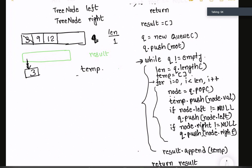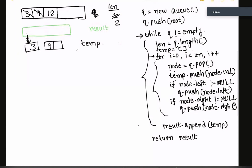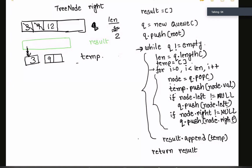Back in the while loop, the queue now has 9 and 20, so length is 2. We initialize a new temp and enter the for loop. We remove 9, push 9 onto temp. Node 9 has no left child and no right child. Since length is 2, we loop again — we pop 20, push 20 onto temp. Node 20 has a left child 15 — push into queue — and a right child 7 — push into queue. The for loop executed twice, so we come out and append this temp to result.